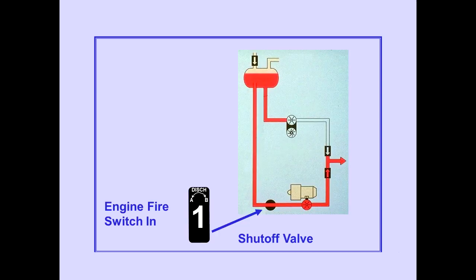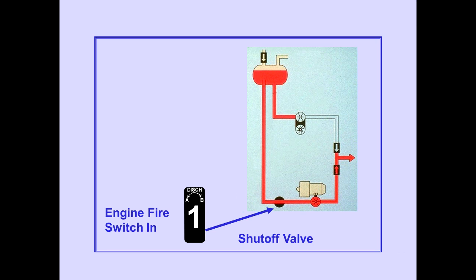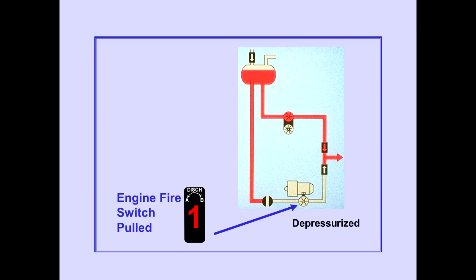The fluid to all engine pumps passes through shut-off valves. The engine fire switch must be in for the shut-off valve to be in the open position. Pulling an engine fire switch closes the shut-off valve to the associated engine pump, preventing the flow of hydraulic fluid to the engine pumps. Pulling the fire switch also depressurizes the engine pump.